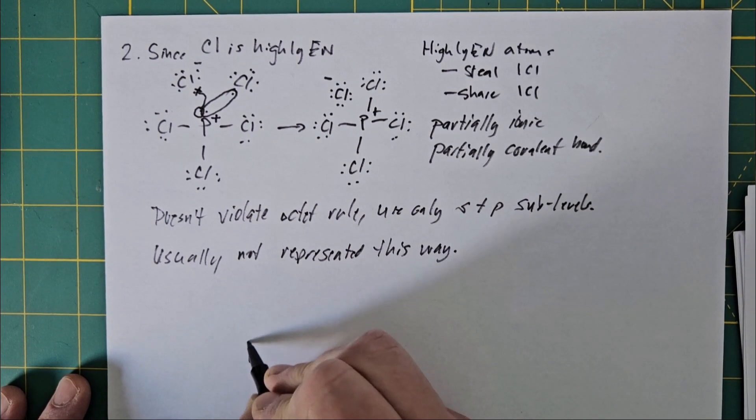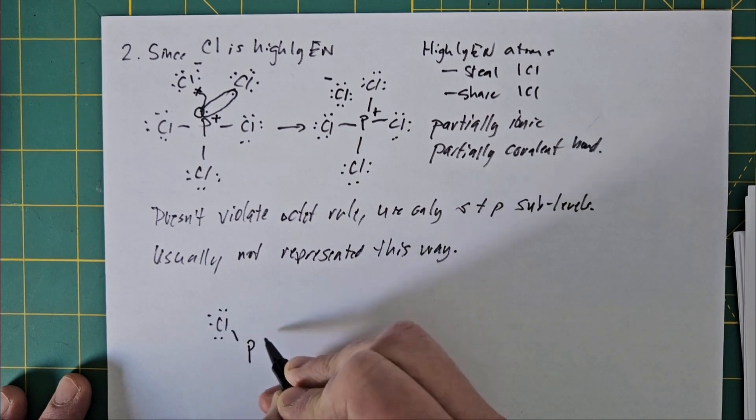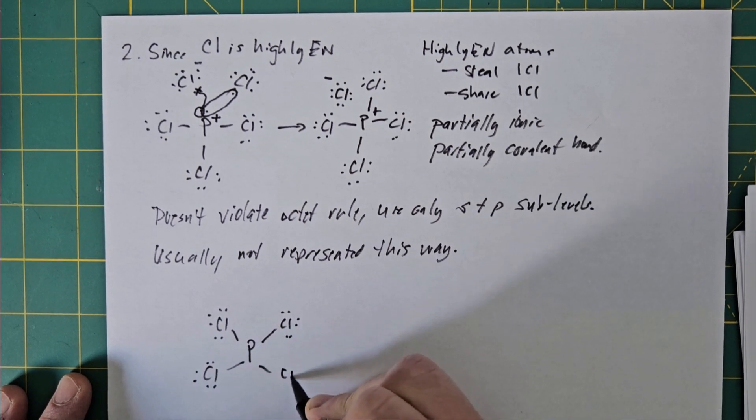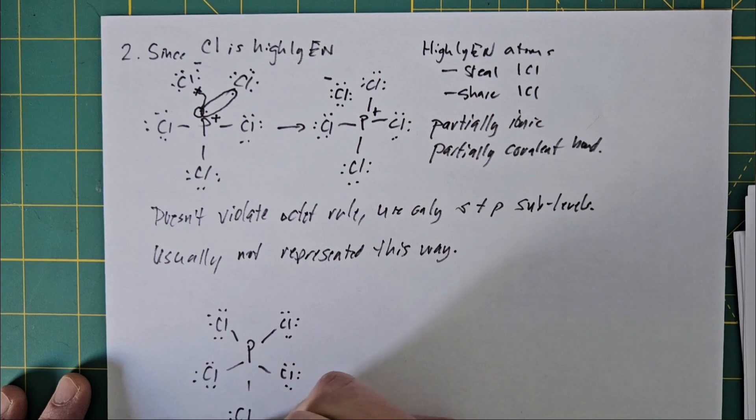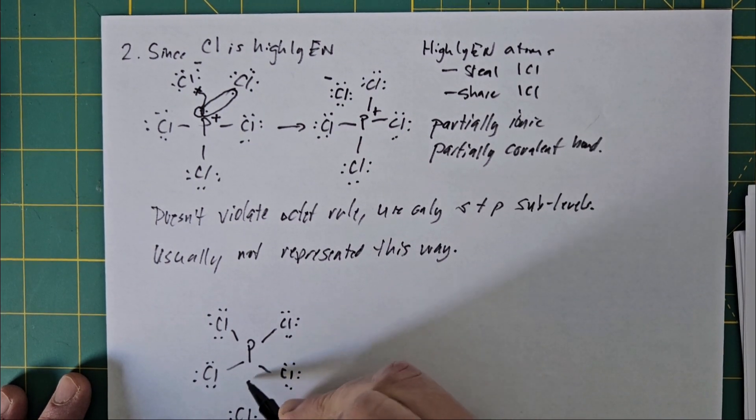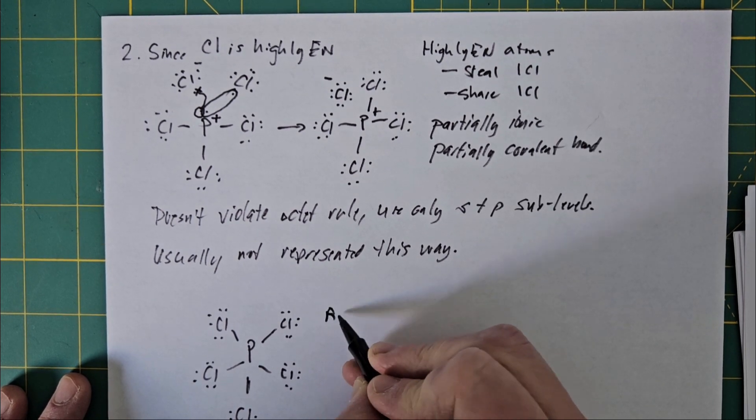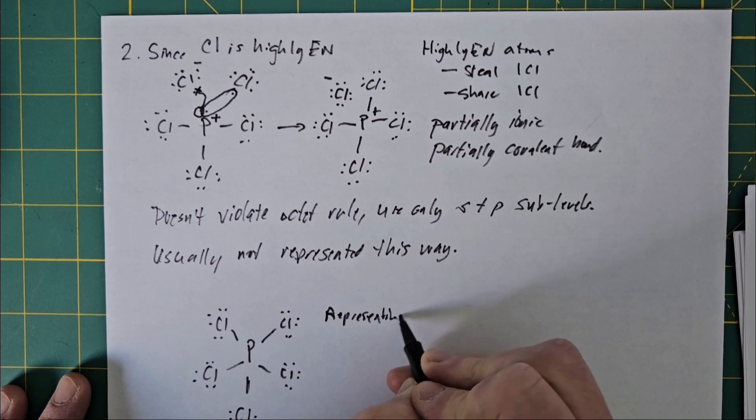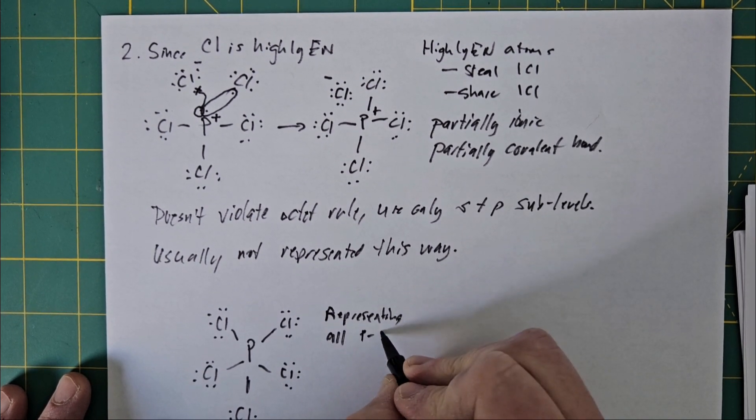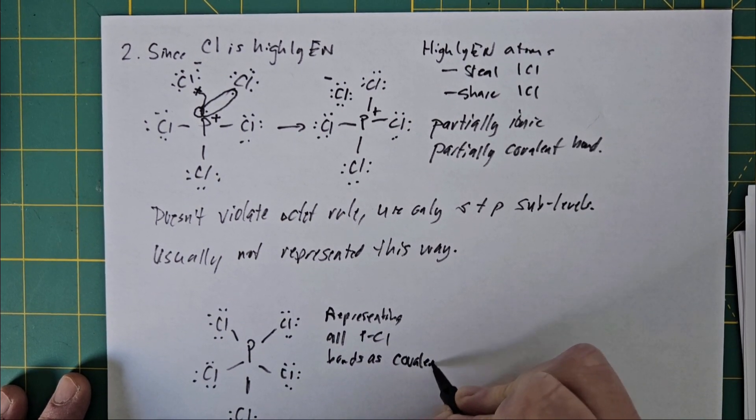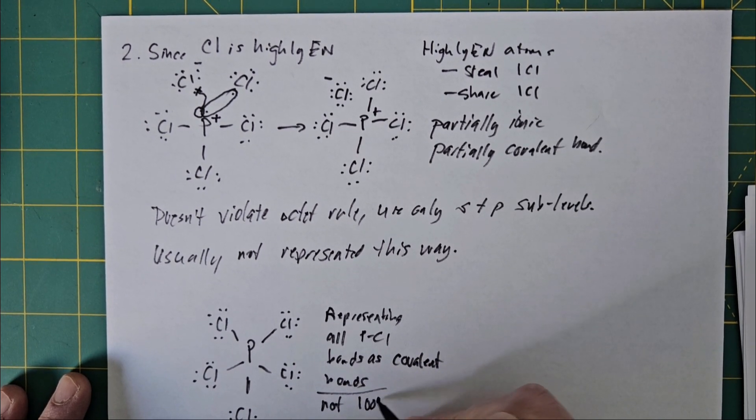So why would something like this then be accepted? Well, the reason it's accepted is that in this drawing, you're representing all the phosphorus chlorine bonds as covalent bonds, even though it's not 100% covalent, you're just pretending like it is.